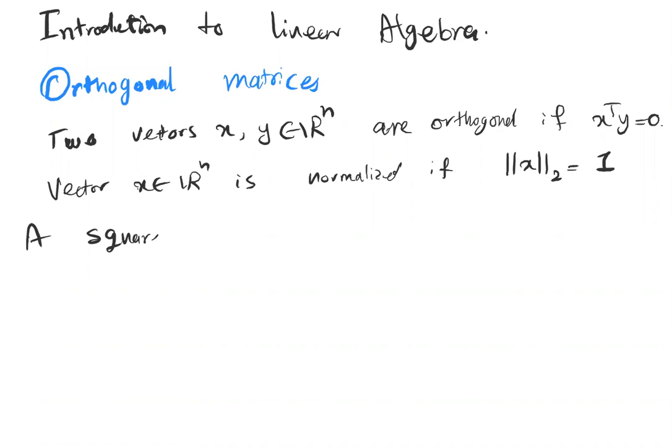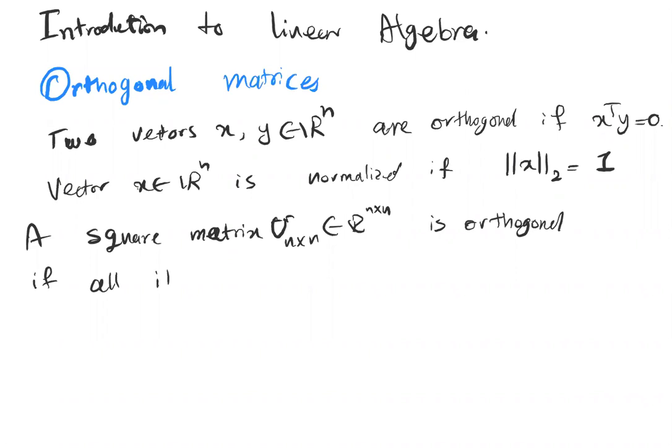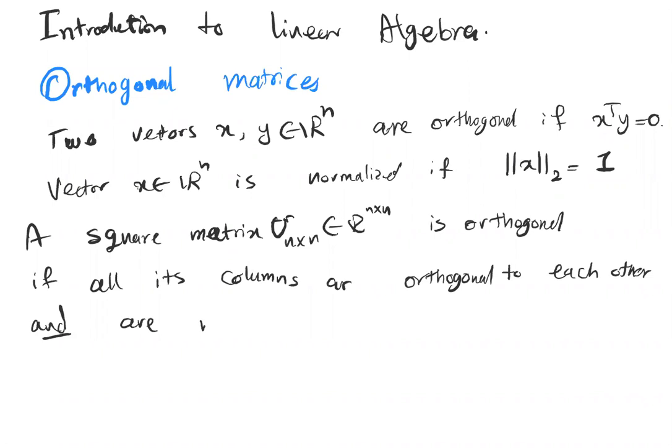Now we want to define a square matrix U which is n by n. This matrix is orthogonal if all its columns are orthogonal to each other and are normalized.